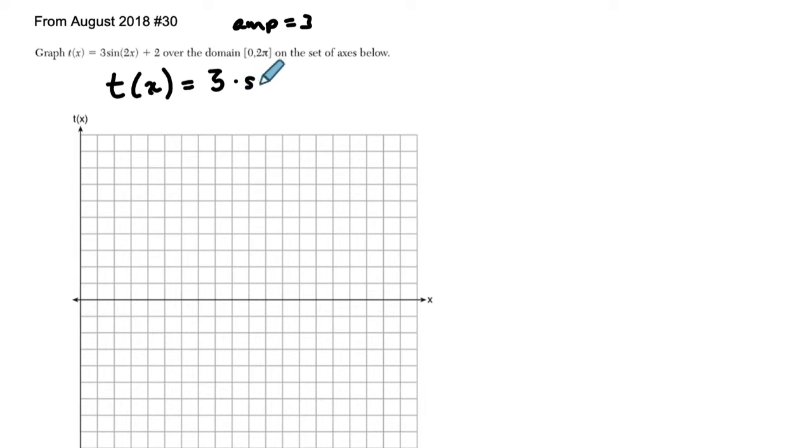Now times the sine of 2x. That tells me that 2 pi over this value here, which sometimes is called k or omega, that's the period. And that's 2 pi over 2 is just pi, and that's our period.